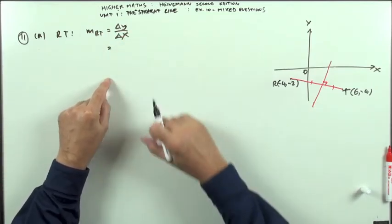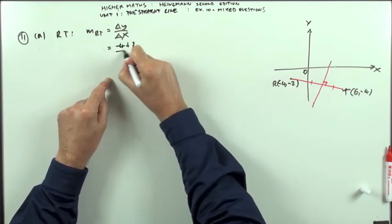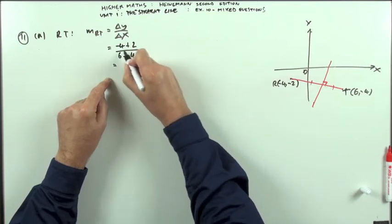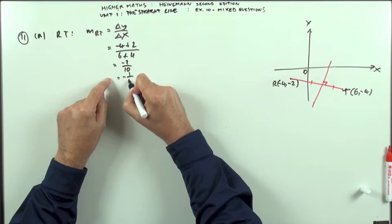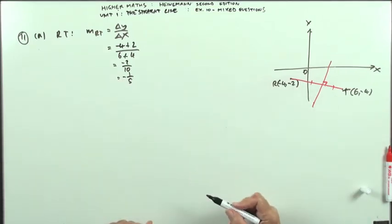So I've got negative 4, take away negative 2, negative 4 plus 2, 6, take away negative 4, 6 plus 4. So that's going to be negative 2 upon 10, so that's negative a fifth. Meaning this line should be down shallow. And it is, so that looks about right.